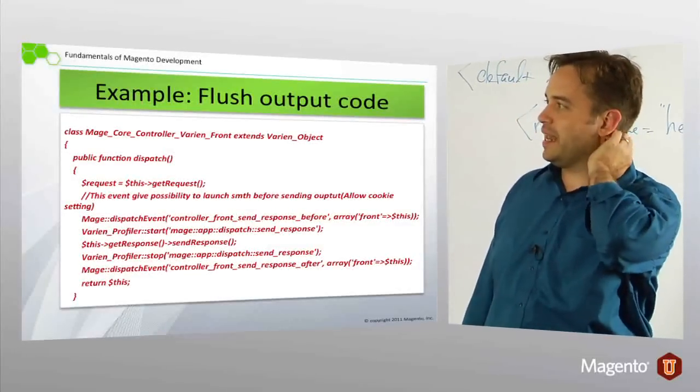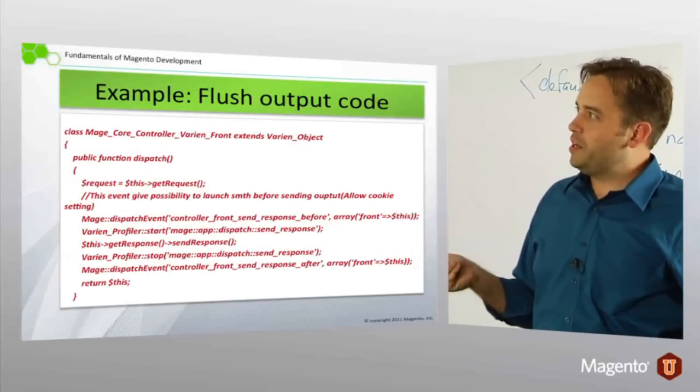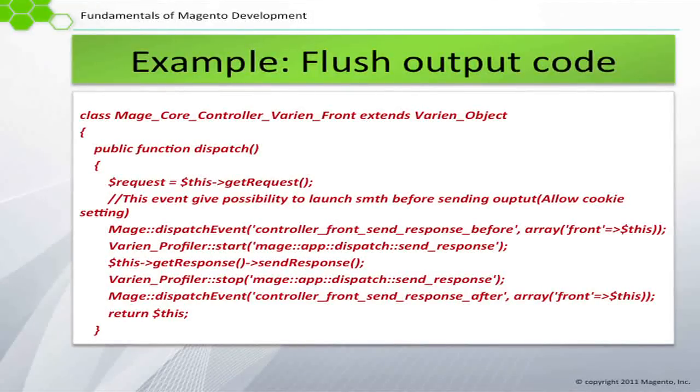So, how does that happen? Well, because we're using mage core controller varien front. We're using our front controller. Here we're getting our request object. We remember dispatch from earlier today. Here we're getting our request object. Here we're getting our response object.